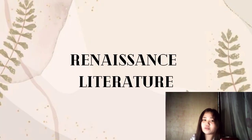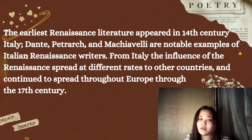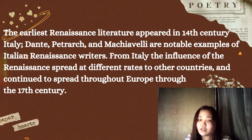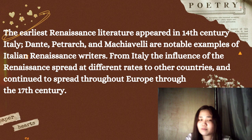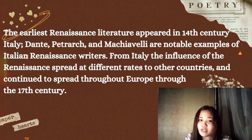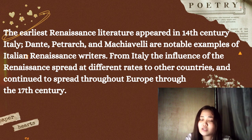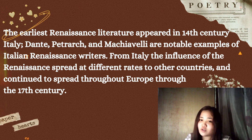The next renaissance art is renaissance literature. The earliest renaissance literature appeared in the 14th century in Italy. Dante, Petrarch, and Machiavelli are notable examples of Italian renaissance writers. From Italy, the influence of the renaissance spread at different rates to other countries and continued to spread throughout Europe in the 17th century.